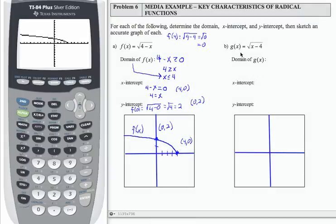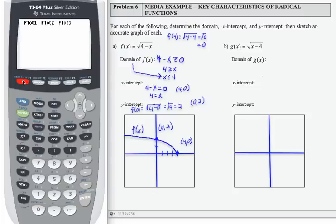Continuing with this problem, for part b, we're looking at the function g(x) equals the square root of x minus 4. So it's slightly different than what we had for f(x).